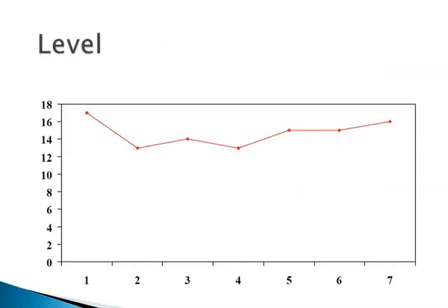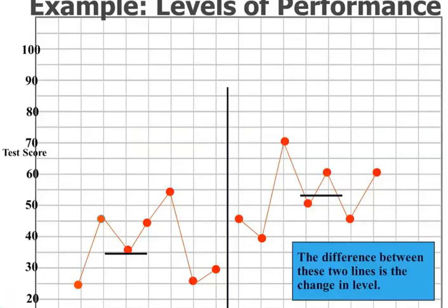There's an example of a level data path. Looking at the left side versus the right side, even though the variability of the data doesn't seem to have changed very much, there has been a level change. Depending on what you're looking for in your objective, this could be good — this could be progress. When you're doing your projects, you do want to look at level changes.